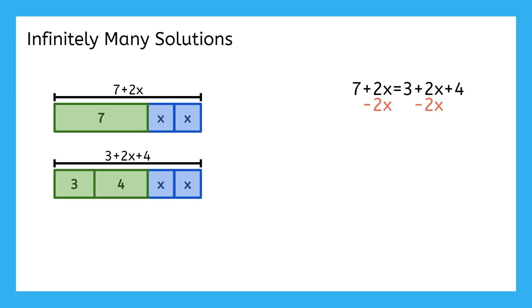Since the variable terms match, they just cancel right out on both sides and leave us with 7 equals 3 plus 4. Since what we're left with here is a true statement, it means that no matter what value we put for x, this equation will still be true. It's just like how it's true that 7 equals 3 plus 4, so there are infinitely many solutions.